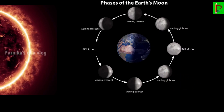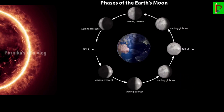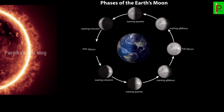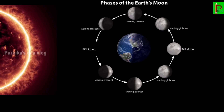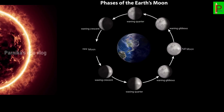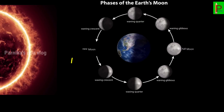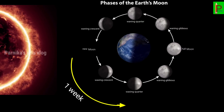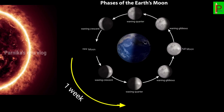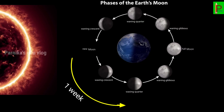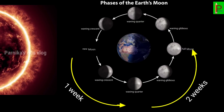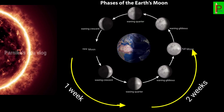Children, after the new moon night, more and more of the lighted portion becomes visible. In one week we can see half of the Moon, and in two weeks the full moon can be seen.